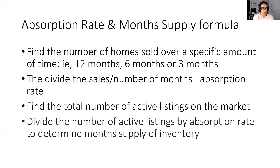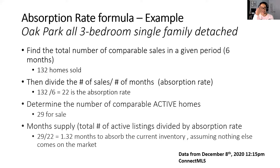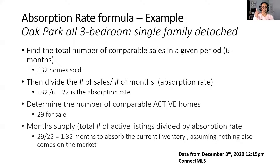I created a few examples. I selected Oak Park with three bedrooms — three-bedroom single-family detached homes. I find the number of comparable sales over a given period; I decided to use six months. As of December 8th, 132 homes sold with three bedrooms. You divide the number of sold homes by the number of months: 132 divided by six gives you 22, which is the absorption rate. That tells me I'm probably selling about 22 homes per month.